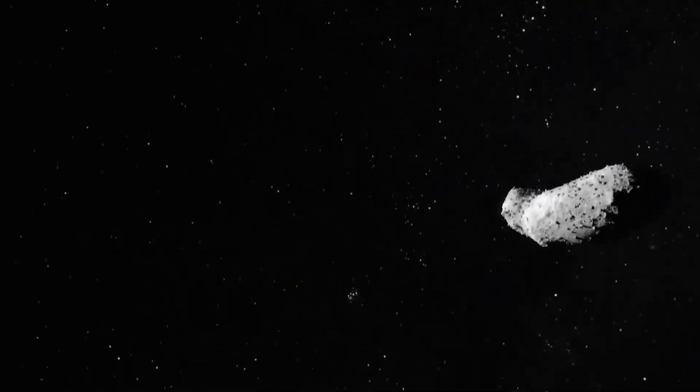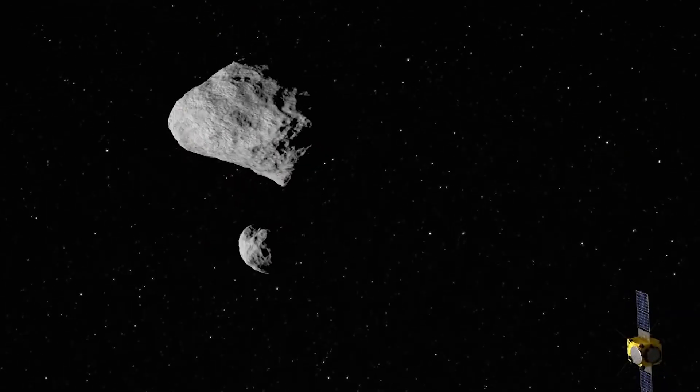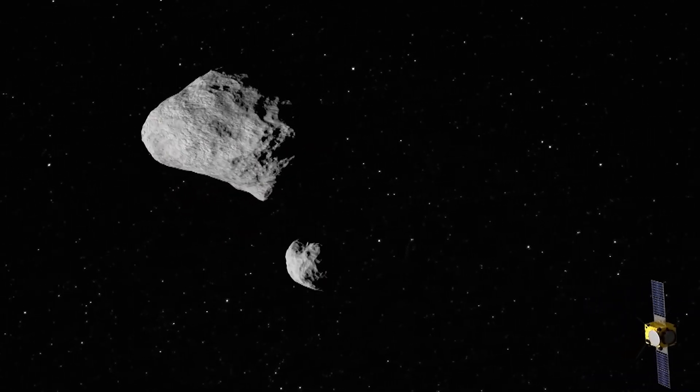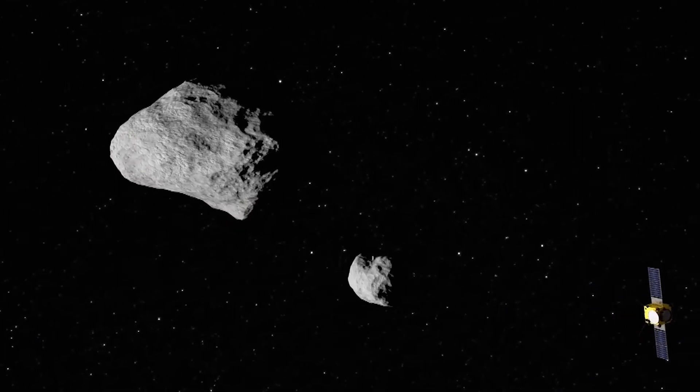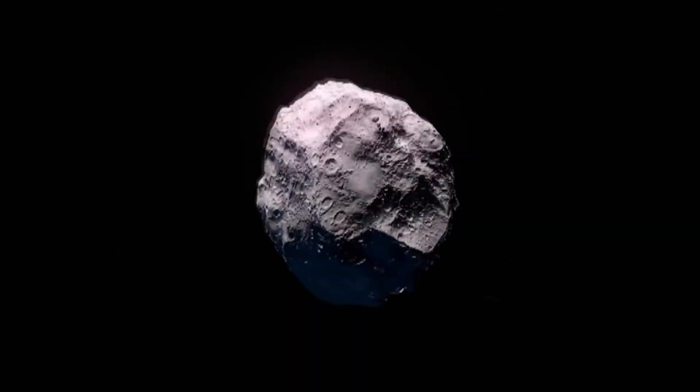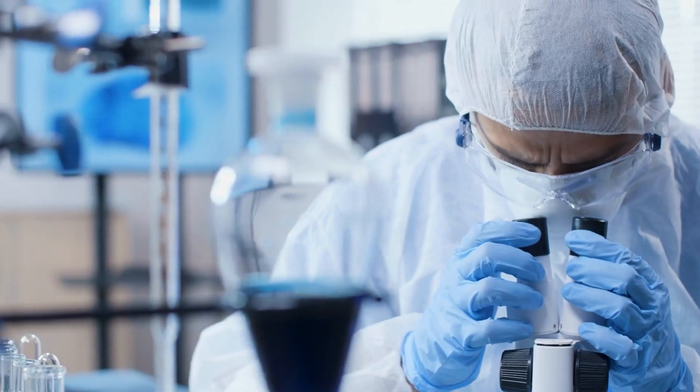This finding suggests that asteroid 33 could be one of these compact ultra-dense objects, potentially harboring elements that scientists have not yet discovered. Maybe some of these theoretical elements happen to be present on it, which would immensely benefit many fields of science.